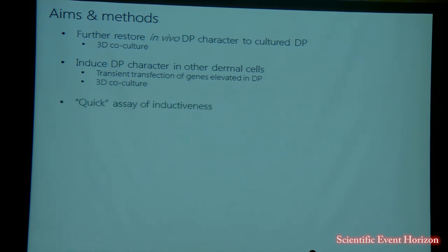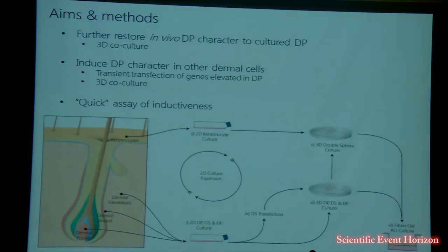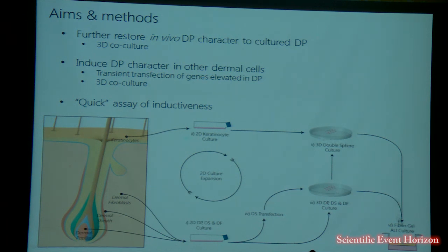A lot of the assays you've seen in these talks are quite long-winded — six, seven weeks — so we're also trying to develop a very quick assay of inductiveness because we want to screen lots of factors. We isolate various dermal populations and keratinocytes and culture and expand these in 2D. All three dermal cell types are formed into 3D hang drops, sometimes coated with keratinocytes from the same patient, and transplanted into a fibrin gel at the air-liquid interface. Some dermal sheaths are taken off, transfected with certain DP-identified factors, and introduced back into the double sphere workflow.